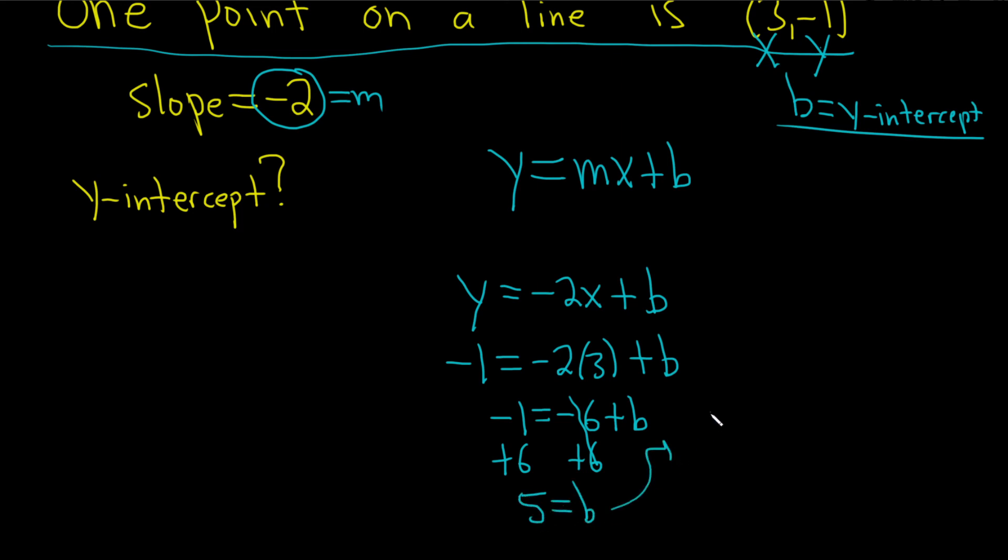So b is equal to 5. That is the y-intercept. Now, a lot of times, it's better to write the y-intercept as an ordered pair. This is the y-value in the y-coordinate of the y-intercept. So as an ordered pair, it's always (0, b), or (0, 5). So that would be the y-intercept.